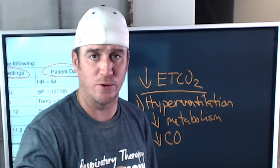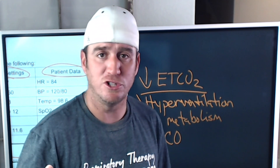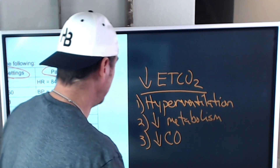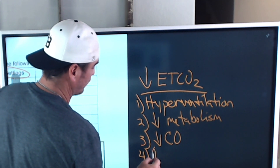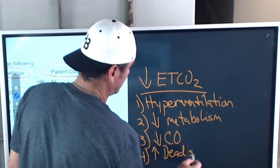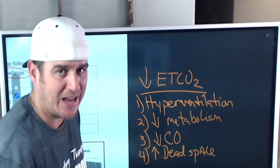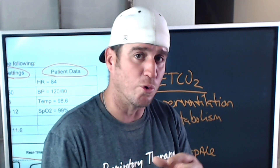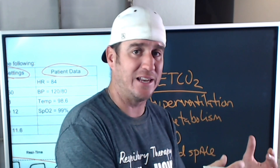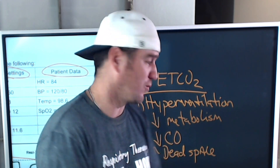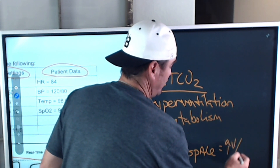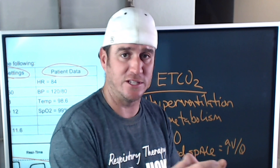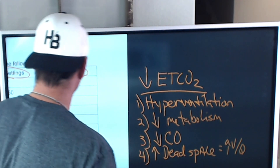Number three: a reduction in cardiac output — if your patient has a dropping blood pressure or decreasing cardiac output, less CO2 is being brought back to the lungs, which decreases end-tidal CO2. Number four: an increase in dead space — this could be a pulmonary embolism, an emphysematous patient, or excessive PEEP reducing pulmonary capillary blood flow, creating ventilation in excess of perfusion — an increased V/Q ratio — which decreases end-tidal CO2.